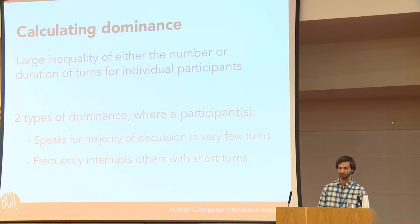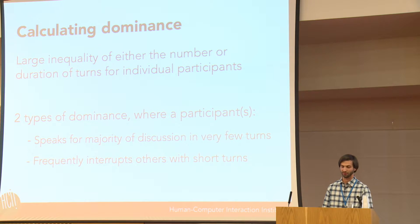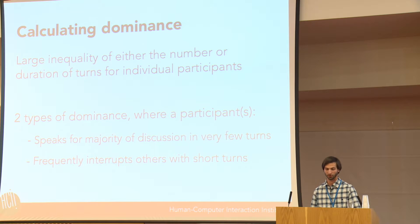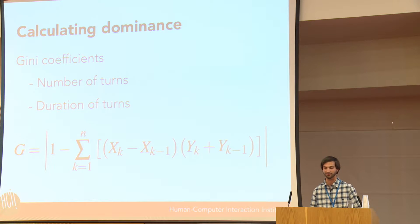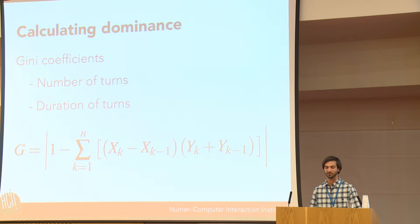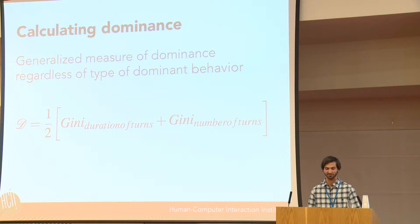We consider a conversation to be dominated when there is a large inequality of either the number or duration of turns for individual participants. By focusing on both number and duration, we can capture two types of dominant behavior: a participant who speaks for the majority in very few turns, or one who frequently interrupts with many short turns. To calculate a measure of inequality, we use a Gini coefficient—a non-binary classification of inequality for both number and duration of turns, measured between zero where all members contributed equally and one where a single member contributed all turns. We average those two Gini coefficients into a single dominance metric.